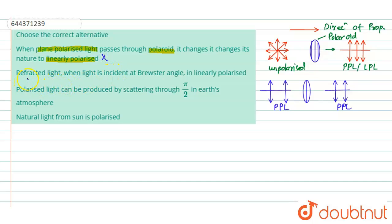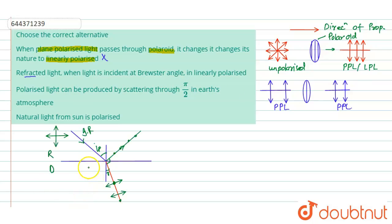The next statement says that refracted light, when light is incident at Brewster's angle, is linearly polarized. Let us draw a diagram for better understanding. When an unpolarized incident ray is refracted in a medium, the refracted light is partially polarized.